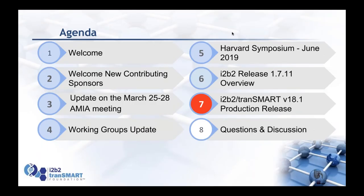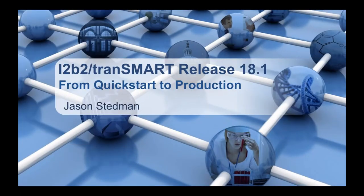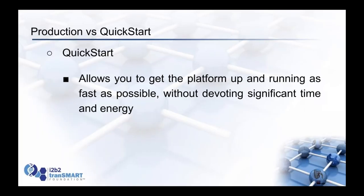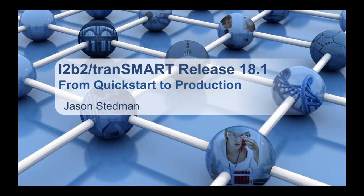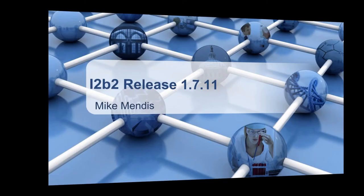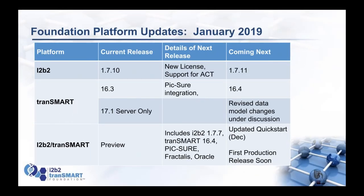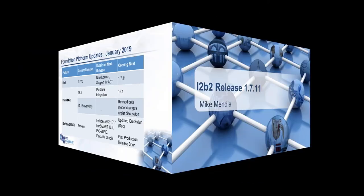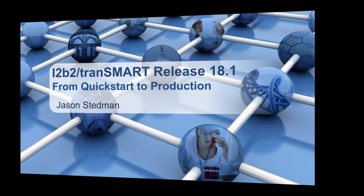Next, we've got Jason Steadman from the Paul VX Group at Harvard, and he's going to talk about the upcoming release of i2b2 TransMart. He wanted to correct one error from the version matrix slide: the version of i2b2 in the i2b2 TransMart platform is actually based off 1.7.10 or 1.7.9. Some work and changes were made, but that's the correct version.